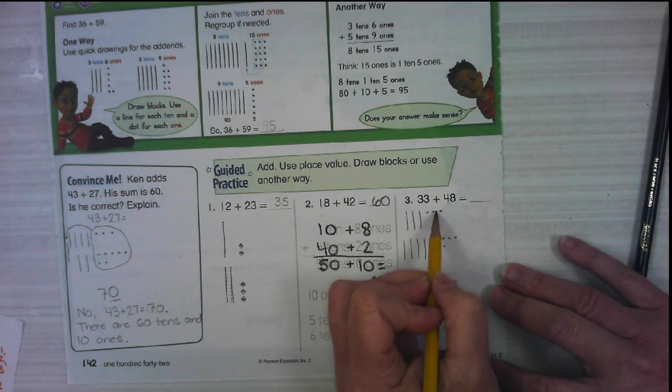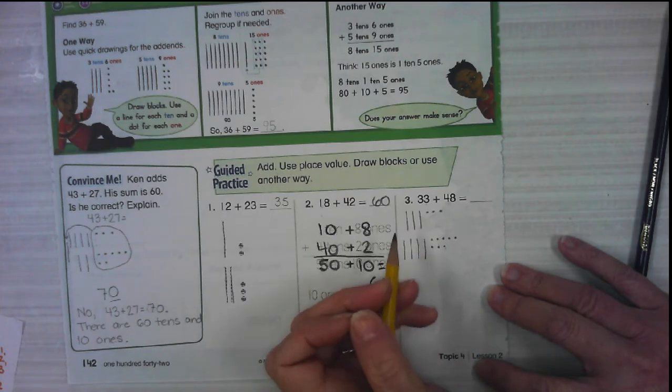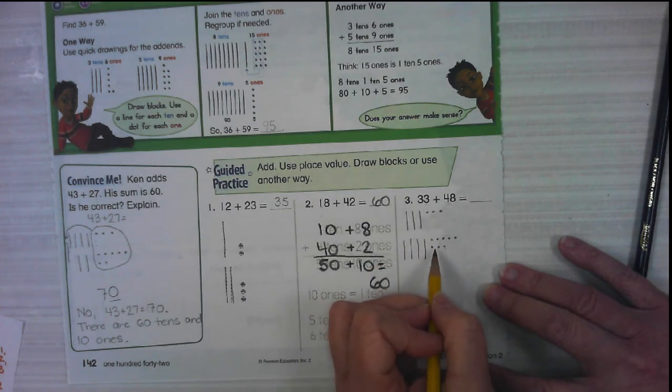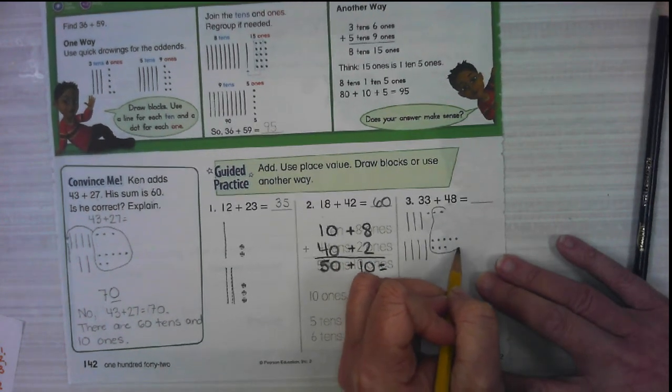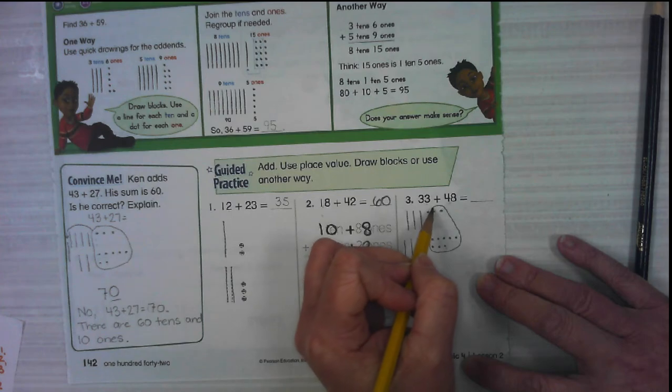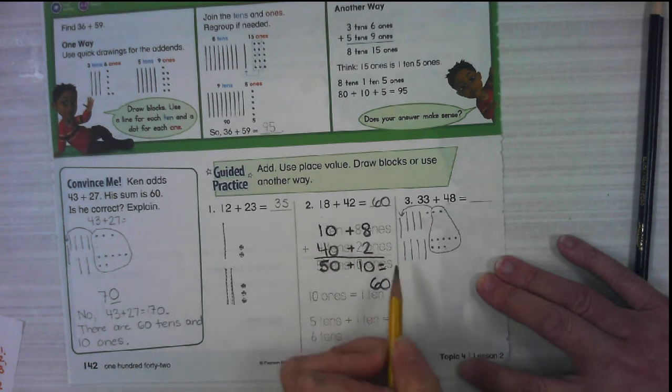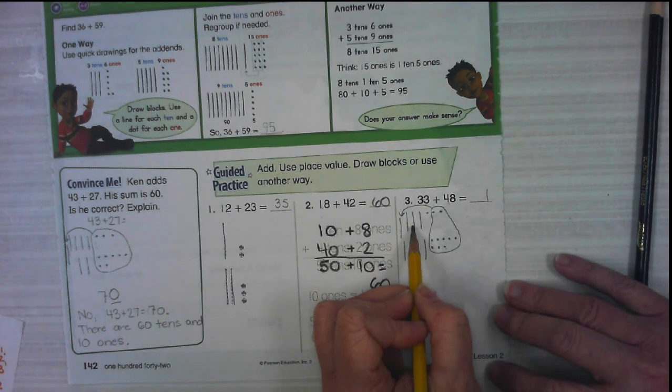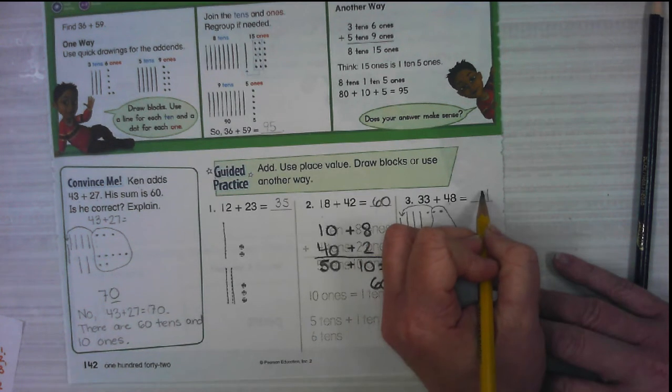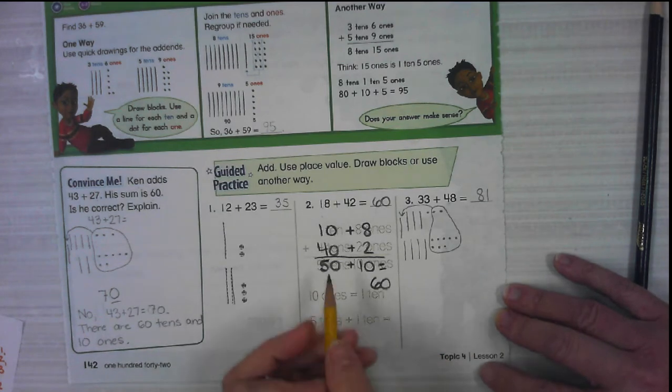Now we need to put our ones together. We have one, two, three, four, five, six, seven, eight, nine, 10, 11. Got to circle 10 and move them to the tens place. So I'm going to use these eight and just grab these two. I'm moving it to the tens place. And I have one left in the ones place. And I have 10, 20, 30, 40, 50, 60, 70, 80, 81.